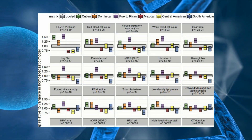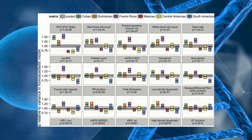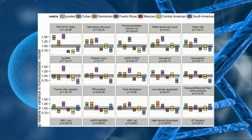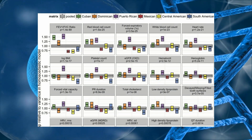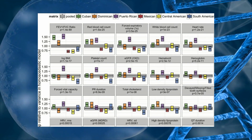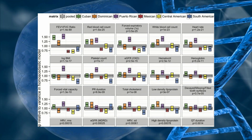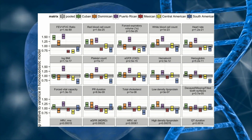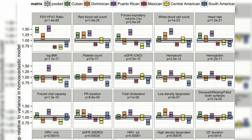Moreover, this study introduces a linear mixed-model (LMM) approach that incorporates genetic analysis groups and principal components to control for familial relatedness and ancestry, respectively. This method has shown to reduce genomic inflation and improve the detection of trait associations in the cohort, offering a model that could be beneficial for other multi-ethnic studies involving admixture and relatedness.